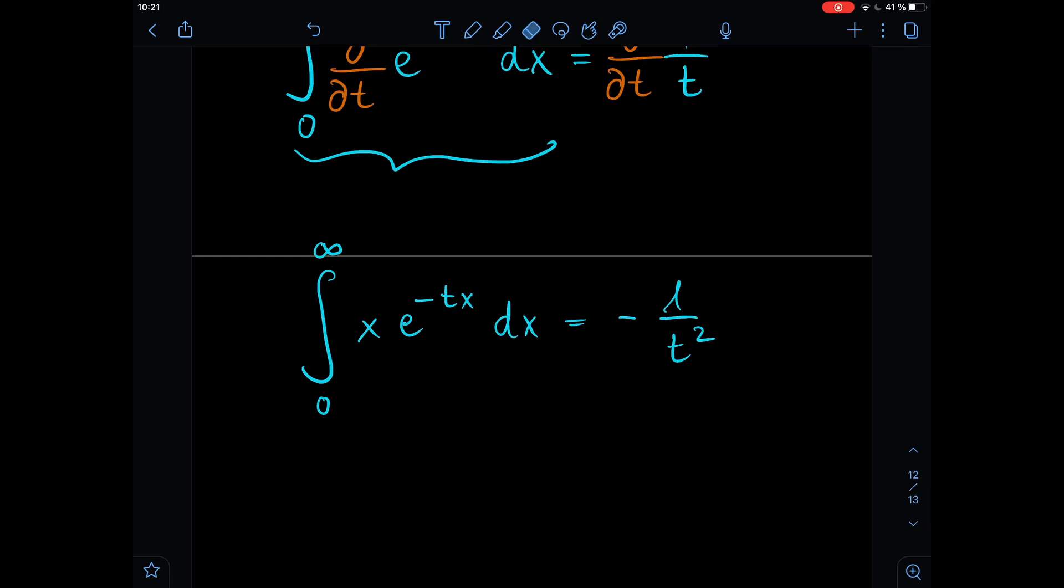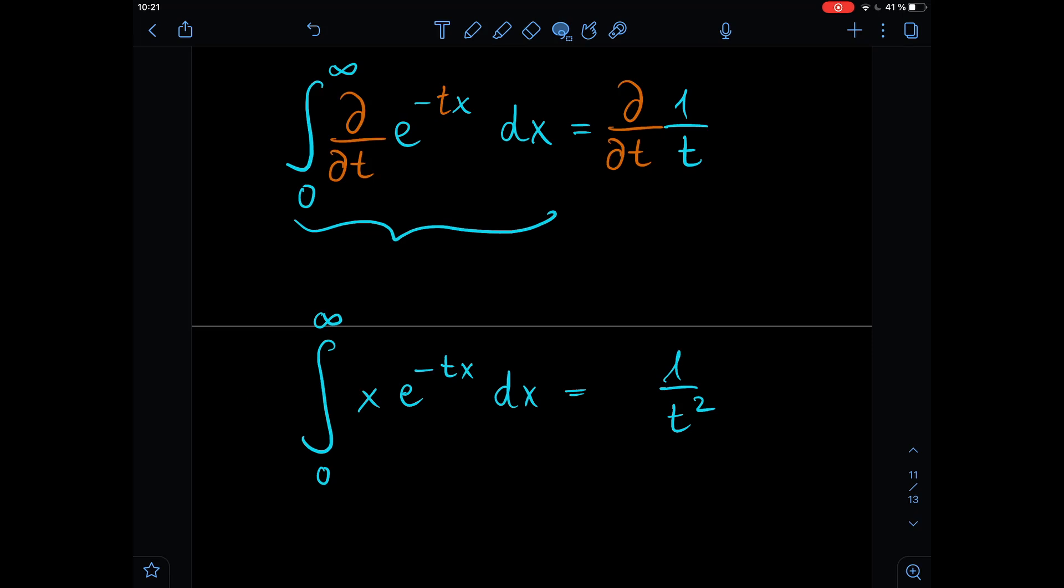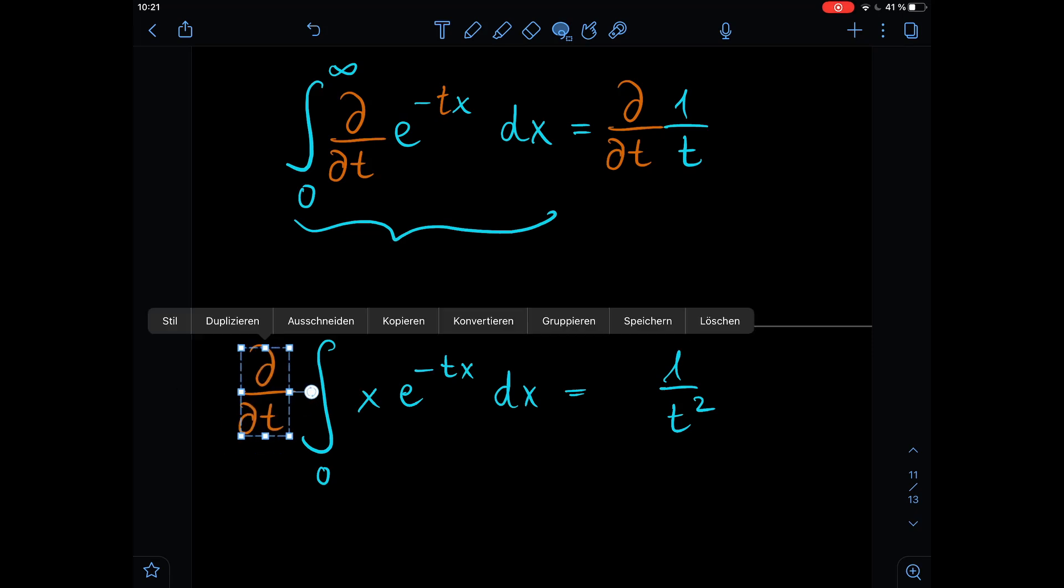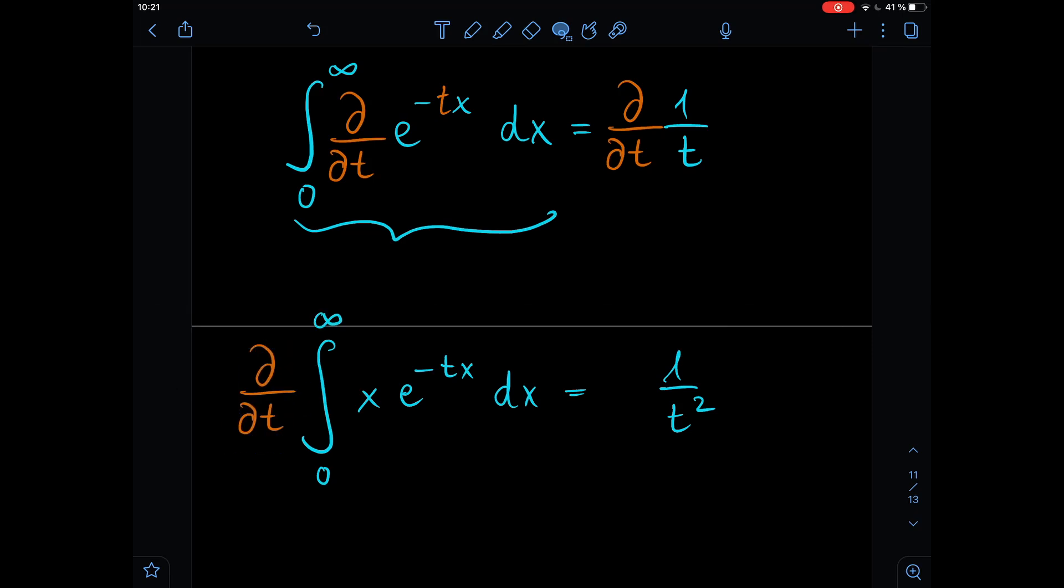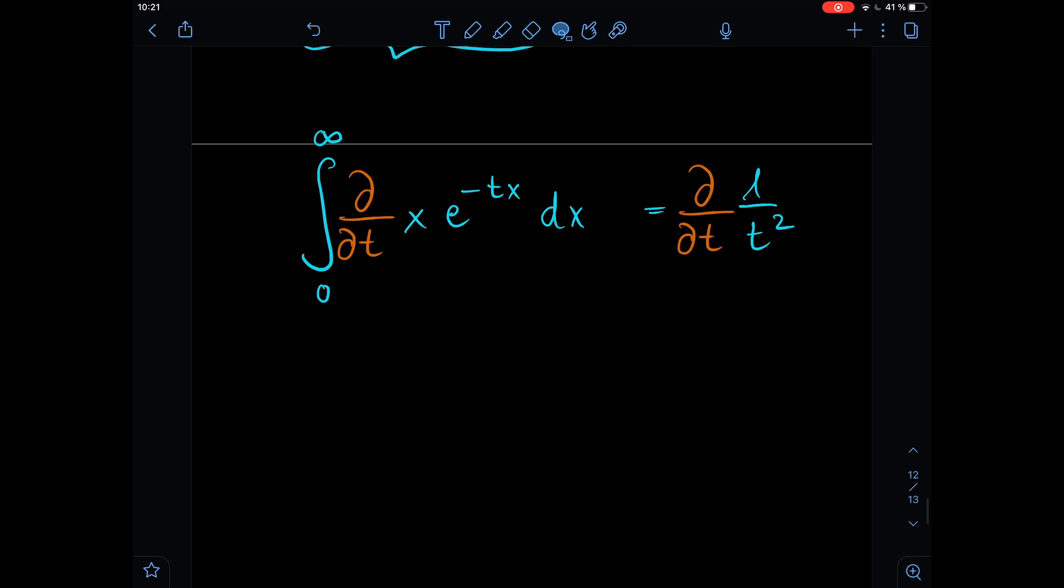Alright, so the minus signs we can just drop them, and now we do the same thing as we did before. We are going to take the derivative with respect to t. So we take the derivative on both sides.